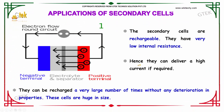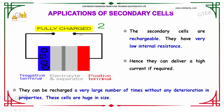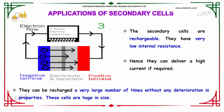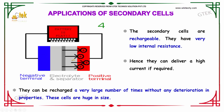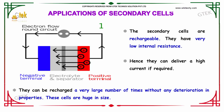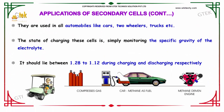The secondary cells are rechargeable and have low internal resistance, hence they can deliver a high current. They can be recharged a very large number of times without any deterioration in properties. These cells are large in size, so they are used in automobiles such as cars, two-wheelers, and trucks. The state of charging these cells is monitored by checking the specific gravity of the electrolyte.